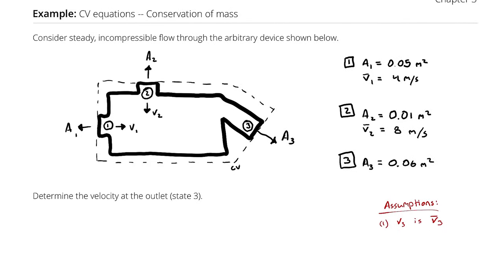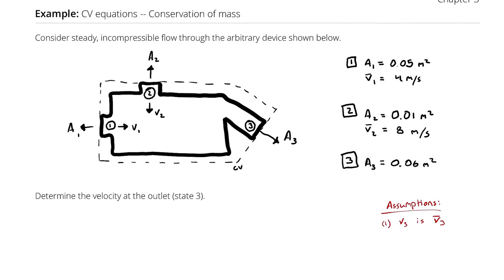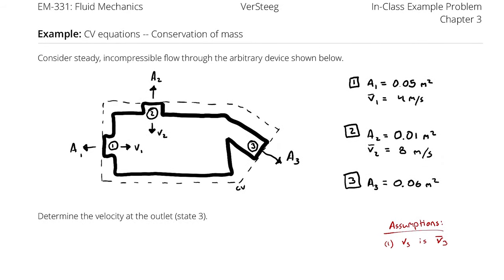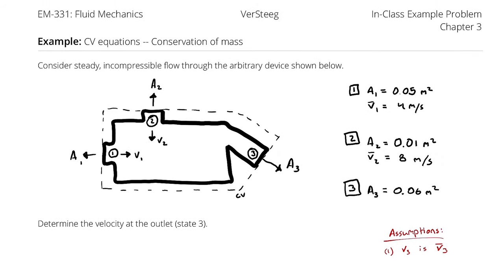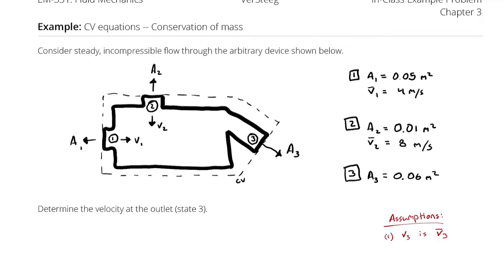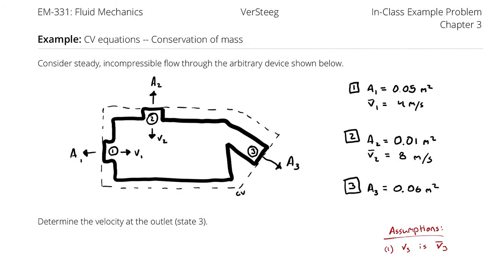I want to solve this with two methods, just to show the way we're thinking about problems in Chapter 3. First I'll work through it like we would have in Thermal 1 with a mass balance, and then we'll apply our Reynolds Transport Theorem for the conservation of mass and simplify until we end up with the same answer.